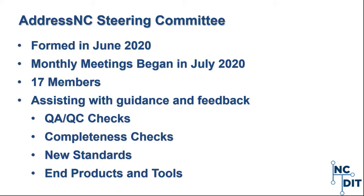The AddressNC Steering Committee was formed in June 2020 and has met monthly since July for a projected six months — we actually met for seven months. The Steering Committee is made up of 17 different members. They have been providing guidance and feedback on QA/QC checks, completeness checks, the new AddressNC standard, and data products and tools that will be published.